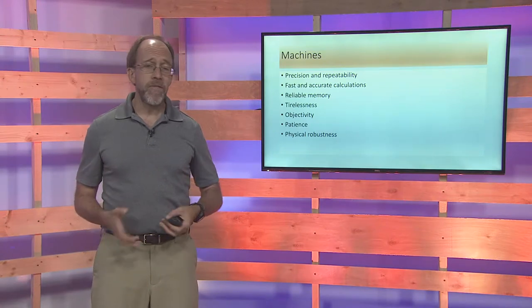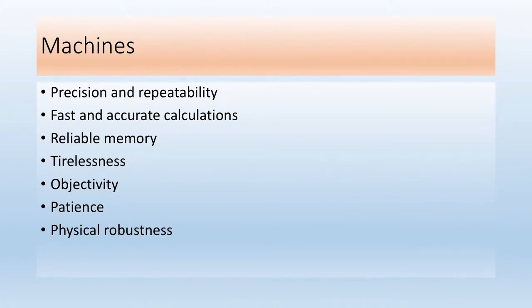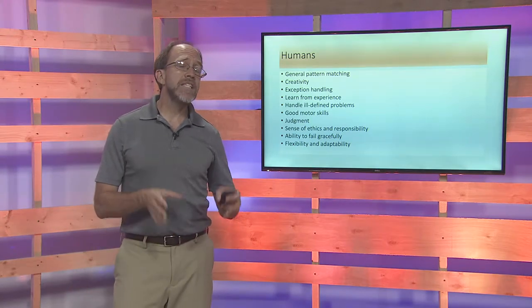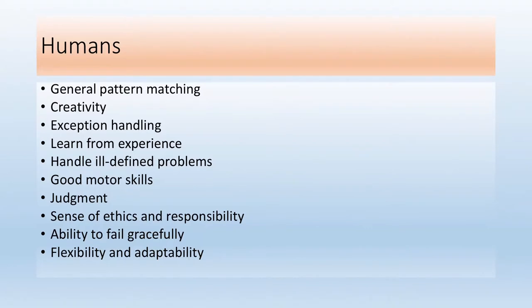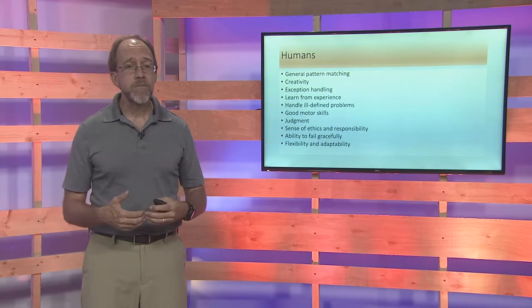Machines have very reliable — in fact, perfect — memory, and they don't typically get tired or need sleep, though they may need downtime for repair. Humans, on the other hand, are very good at creative tasks. One thing humans do extremely well is they fail well — machines often fail catastrophically, while humans typically recover fairly well. That's extremely important in designing safe systems that can handle adverse or less-than-optimal conditions.